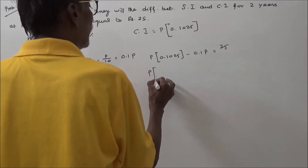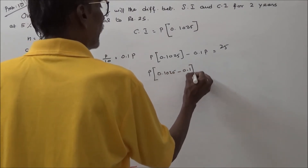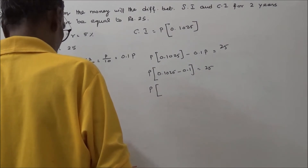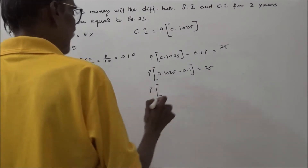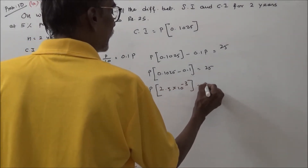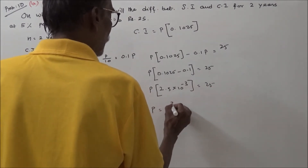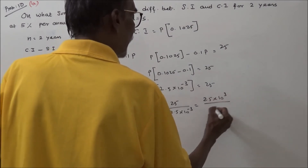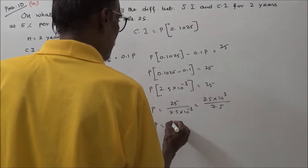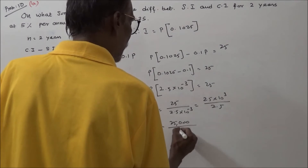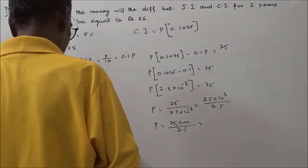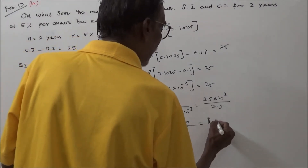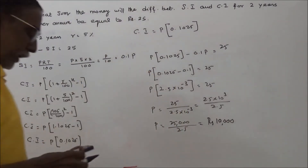P is common, so we take it out: P into (0.1025 minus 0.1) equals 25. That gives P into 0.0025 equals 25. Therefore P equals 25 divided by 0.0025, which equals 10,000 rupees. So the principal value is Rs. 10,000.